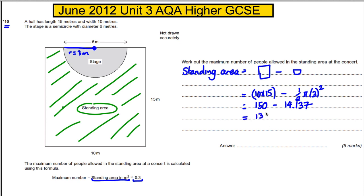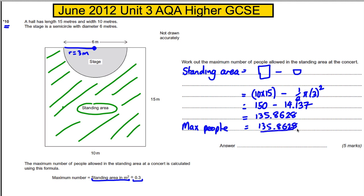Subtracting the two gives 135.8628 — don't round just yet. The maximum number of people is this standing area of 135.8628 divided by 0.3.